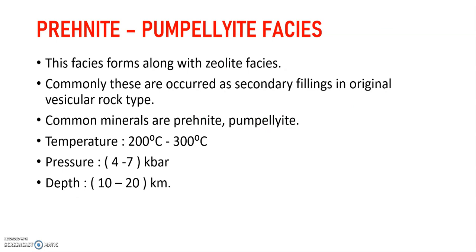Prehnite-Pumpellyite facies forms along with zeolite facies commonly, and these occur as secondary fillings in original vesicular rock types. These are also formed under hydrothermal metamorphism. Common minerals are prehnite and pumpellyite. It occurs at temperatures of 200°C to 300°C, pressures of 4 to 7 kilobars, and depths of 10 to 20 kilometers.